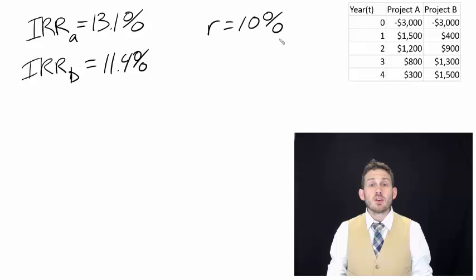So what's the rationale for using IRR? Why might we look at this? Why might it tell us a little bit different information than the NPV?